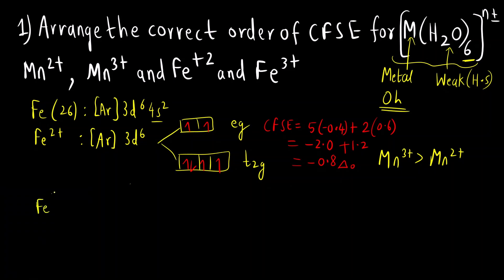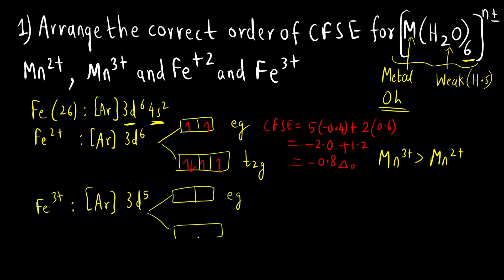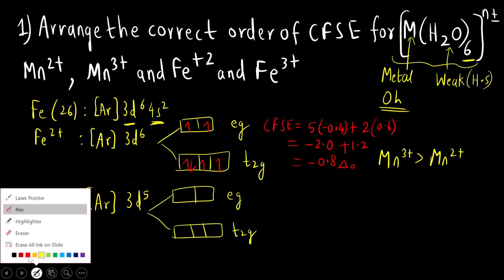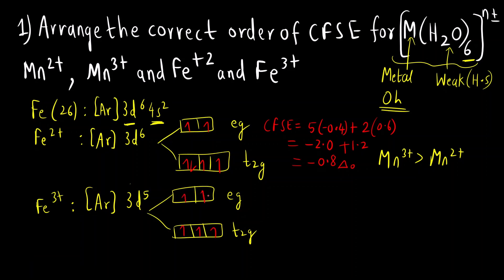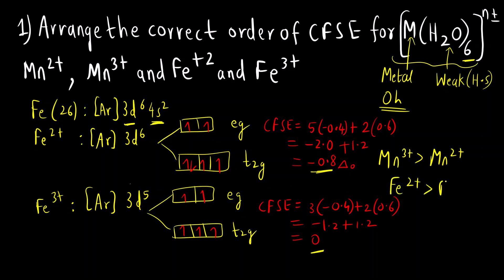For Fe³⁺: two electrons are removed from 4S and one from 3D, giving [Ar] 3D5. Filling one, two, three, four, five electrons, CFSE = 3×(-0.4) + 2×(0.6) = -1.2 + 1.2 = 0. Comparing magnitudes: 0.8 > 0, so Fe²⁺ has greater CFSE than Fe³⁺. This is the correct order of CFSE.